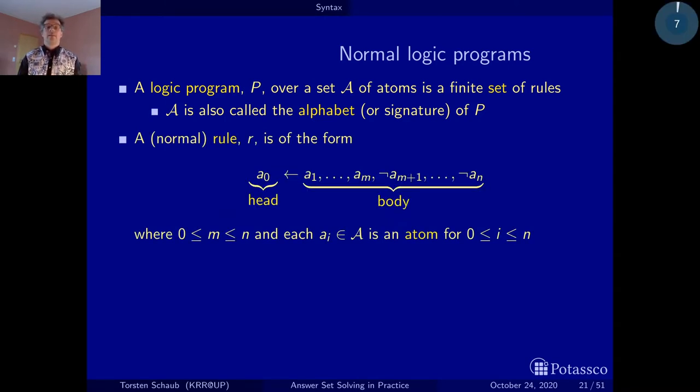Then a rule has this form, as you've already seen in the motivational part. We have a head and the body, and both are connected by this implication, which can be read as an if. So a_0 can be derived if the body is satisfied. I also owe you an explanation what I mean with this normally. When I talk about a rule, I mean such a rule here. Something that has only atoms as its constituents, and notably also a single atom in the head. Because as you will see later, there are more complex language constructs like cardinality or weight constraints. Whenever I talk only about a rule, I mean a normal rule, and this is a rule of this type.